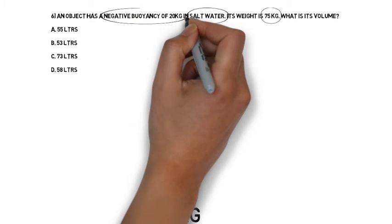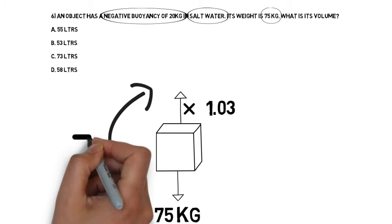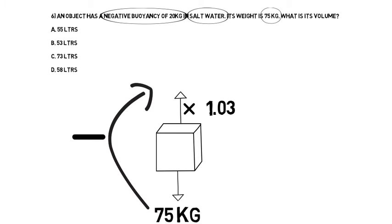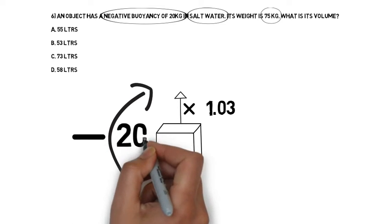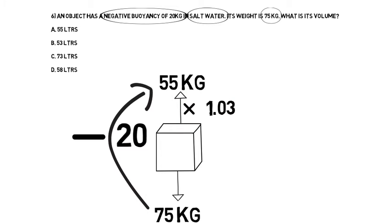The fact that it is negatively buoyant by 20 kilograms is the other bit of information I need. If it's negatively buoyant by 20 kilograms, that means the upward force is 20 kilograms less than the downward force. If the downward force is 75 kilograms, then the upward force must be 55 kilograms.